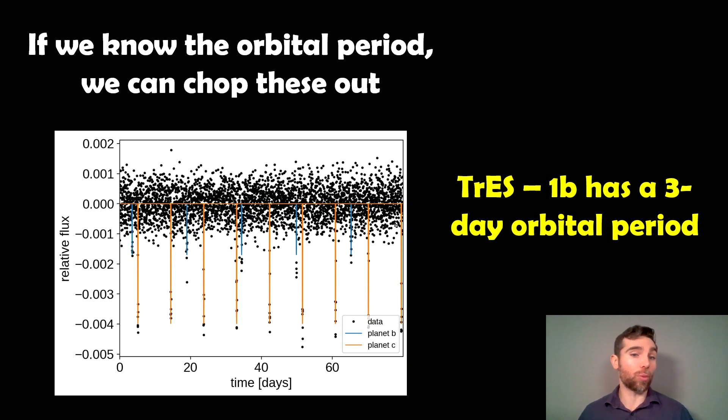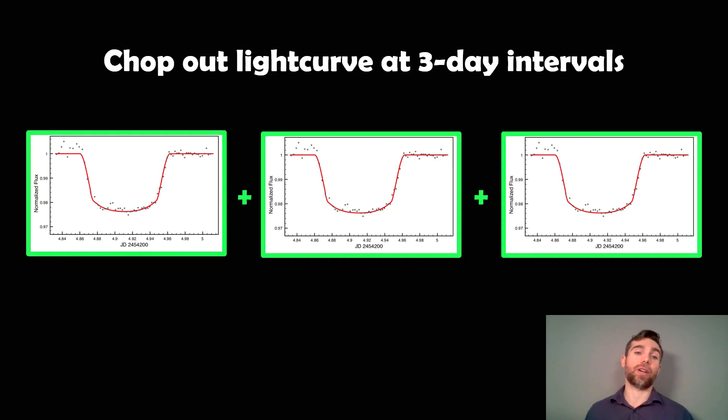TRES 1b has a three-day orbital period. If we know that orbital period between each individual transit, we can actually chop them out of the much larger light curve. Here we're going to chop out three. If we assume it's a three-day interval between each transit, we can go three days ahead in the light curve, chop it out, then again, and then again.